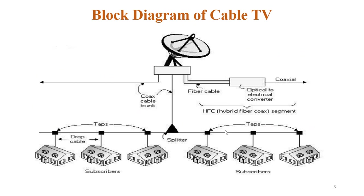Now this is the block diagram of cable TV. Here we can see that at the top there is an antenna. In earlier times, approximately 20 years ago, there were very large TV antennas used only by cable providers. They received the RF signals through those antennas.